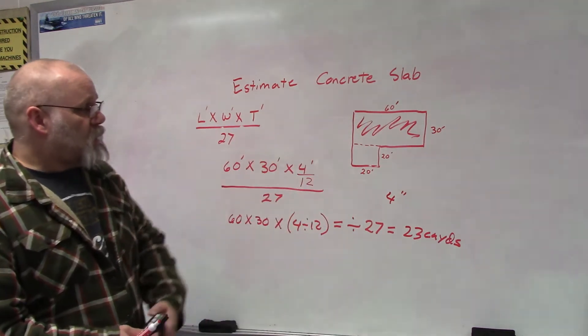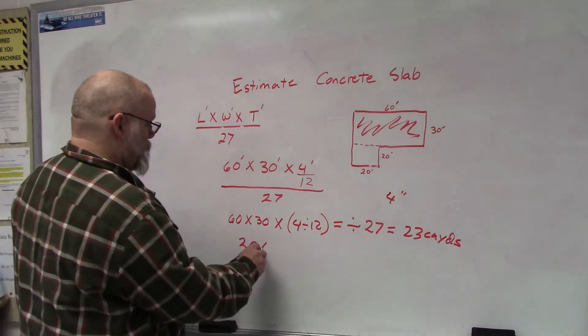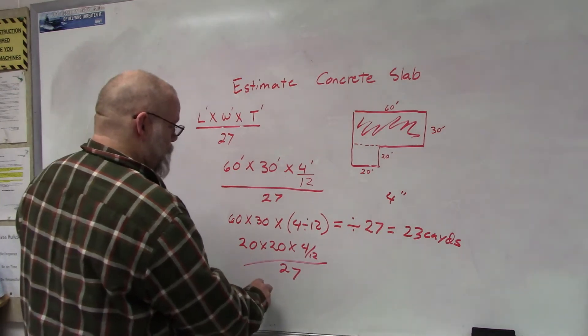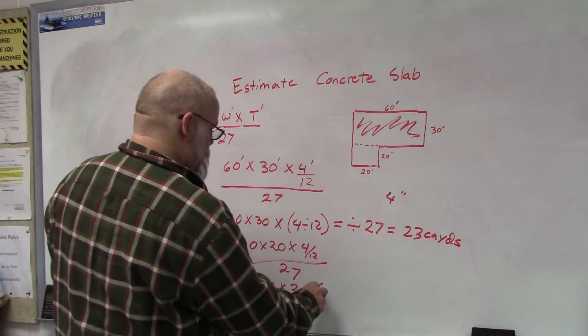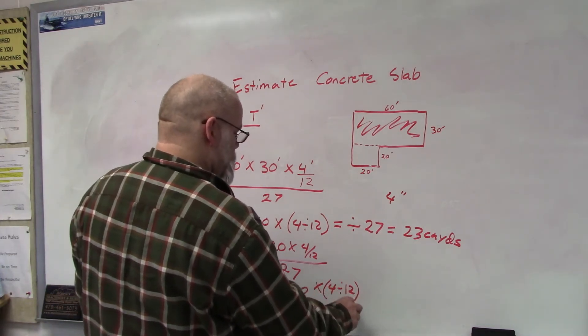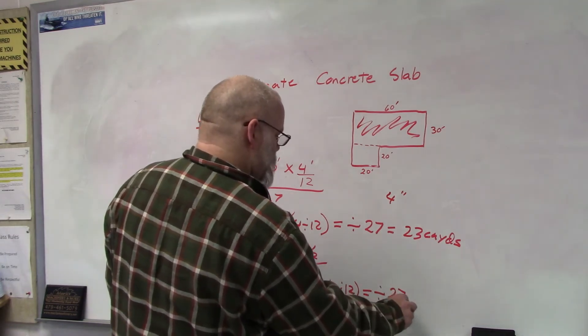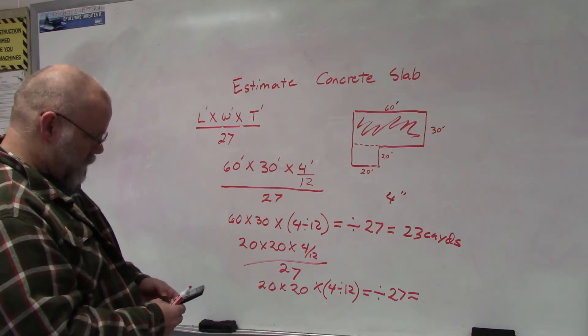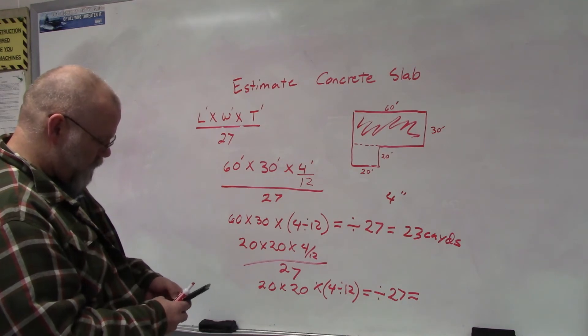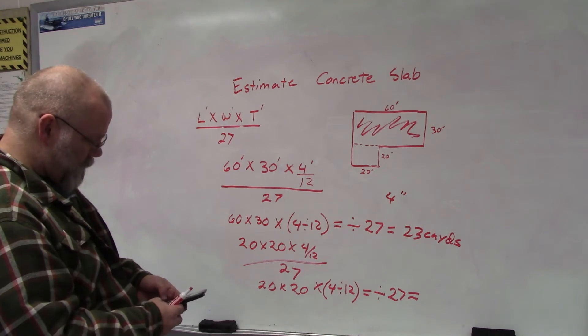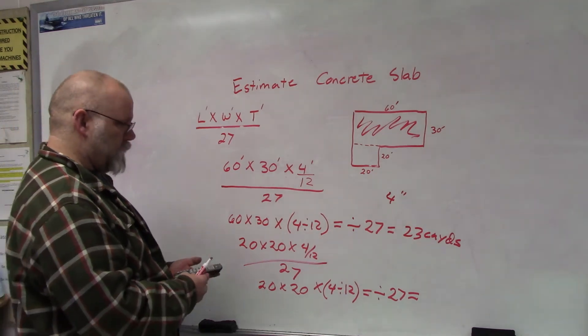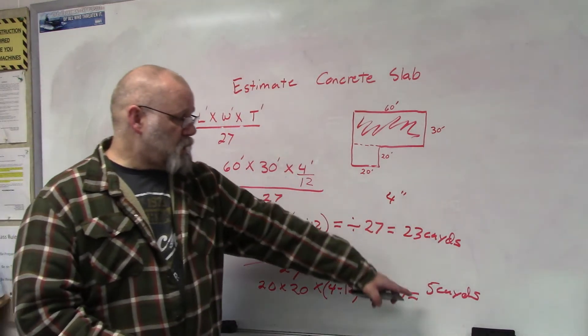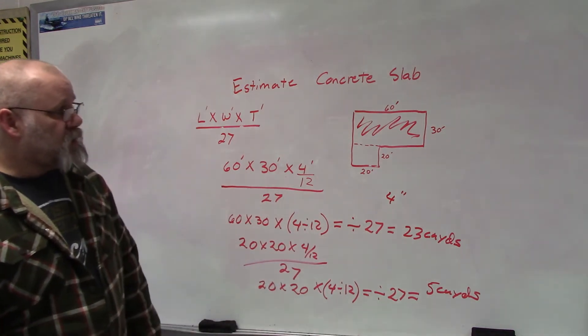Now I'll do the same calculations for my smaller section. So it would be 20 times 20 times 4 over 12 divided by 27. That would be 20 times 20 times parentheses 4 divided by 12, equals, divided by 27, equals 4.93 or we'll say 5 cubic yards. So I add the two together—this floor would be 28 cubic yards of concrete.